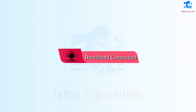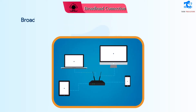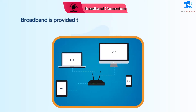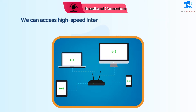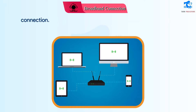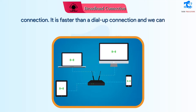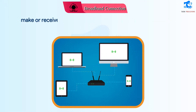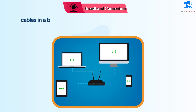Broadband Connection. Broadband is provided through cable or telephone companies. We can access high-speed internet through a broadband connection. It is faster than a dial-up connection and we can still make or receive calls. We can access the internet only through cables in a broadband connection.